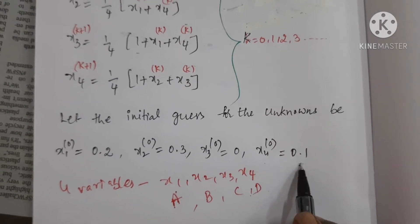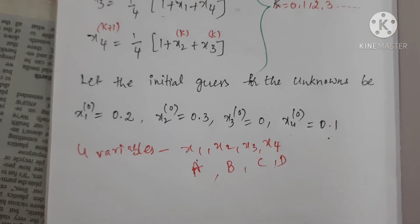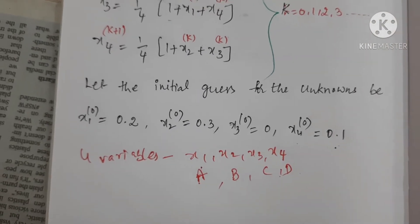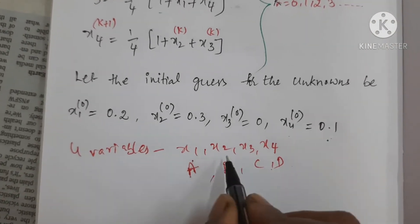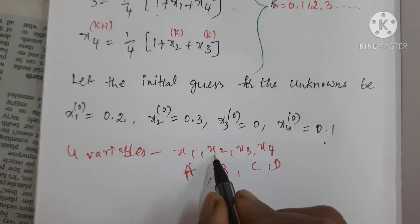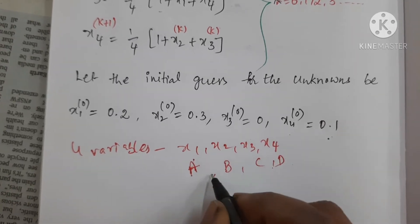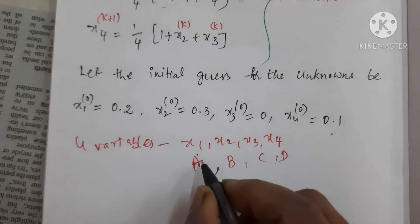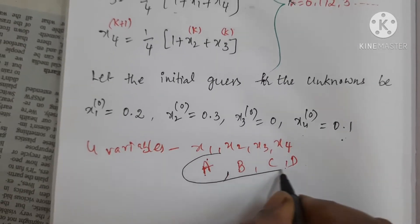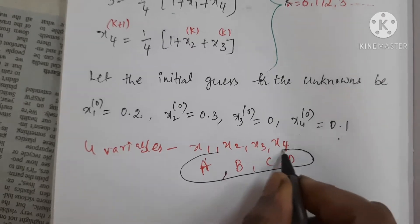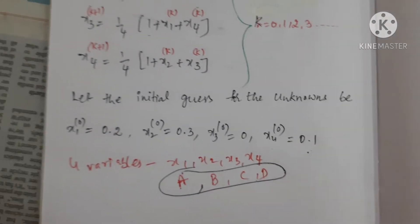Now we are going to generate a sequence of approximations in our calculator. All the unknowns x1, x2, x3, x4 can be assigned by the letters a, b, c, d in our calculator.